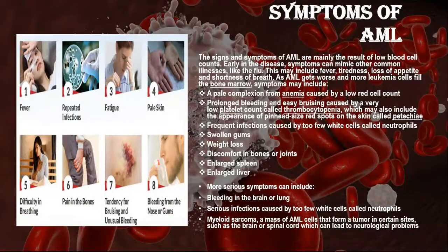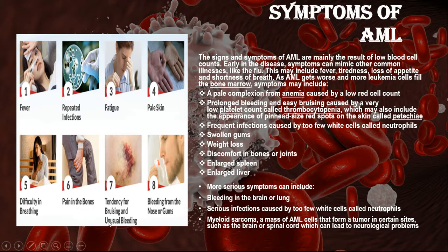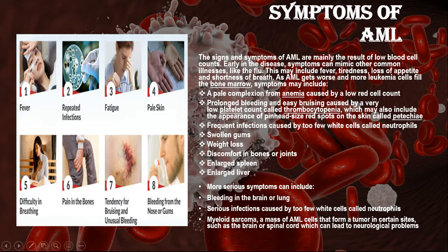The most common symptoms of AML are fever, anemia, repeated infections, fatigue, pale skin, difficulty breathing, bone pain, tendency for bruising, and unusual bleeding due to decreased platelet counts — including bleeding from the nose and gums. More serious symptoms include bleeding in the brain or lungs, and serious infections caused by too few white blood cells, called neutropenia.